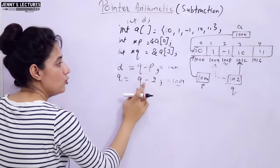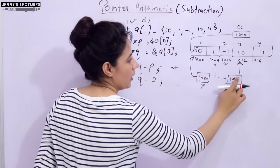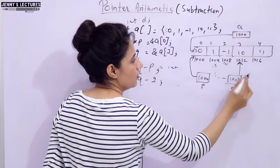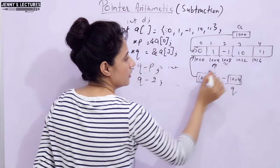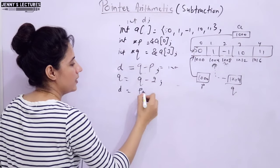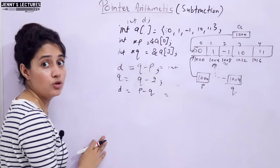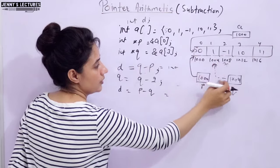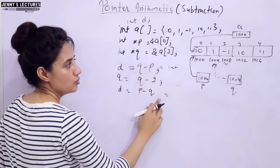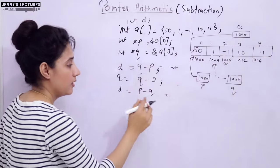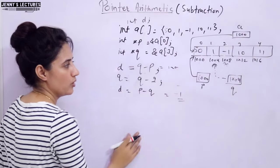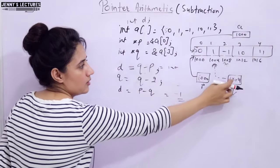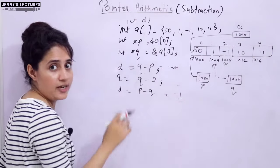After Q equals Q minus 2, Q is now at address 1004. Now if you find difference equals P minus Q: P is here at index 0 and Q is here at index 1 — they are one element apart, but it is P minus Q, so you get minus 1. That is 1000 minus 1004 equals minus 4 divided by 4 equals minus 1. If you do Q minus P, it gives 1.